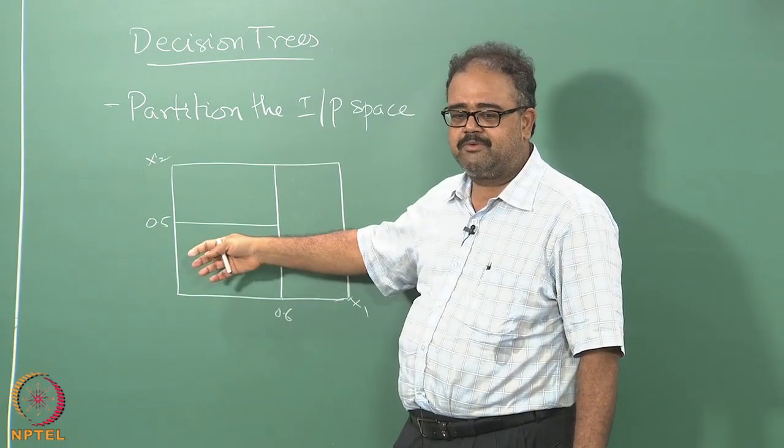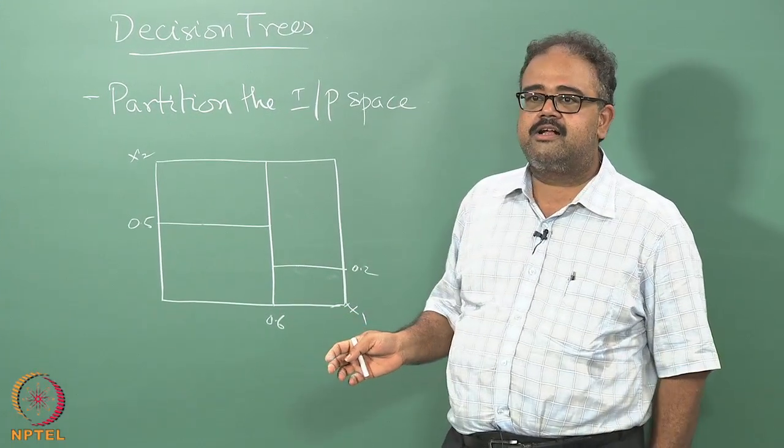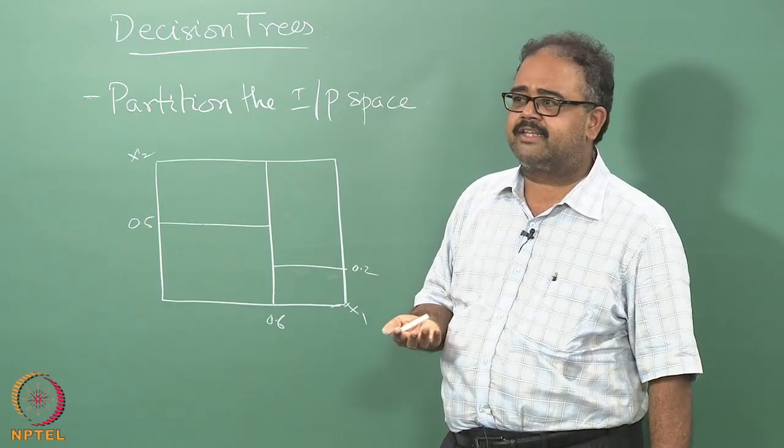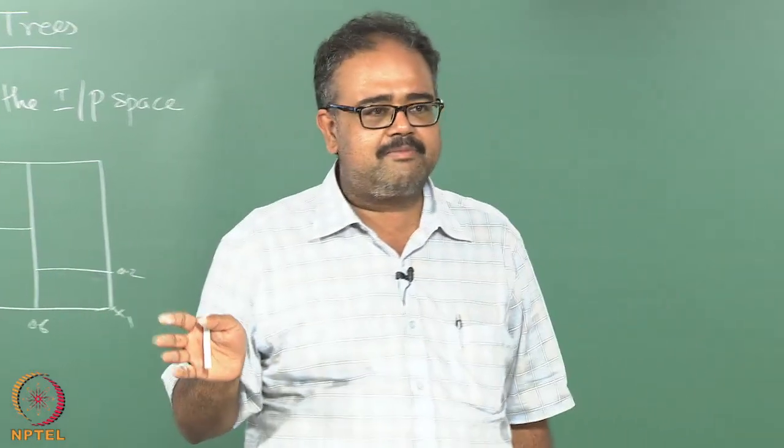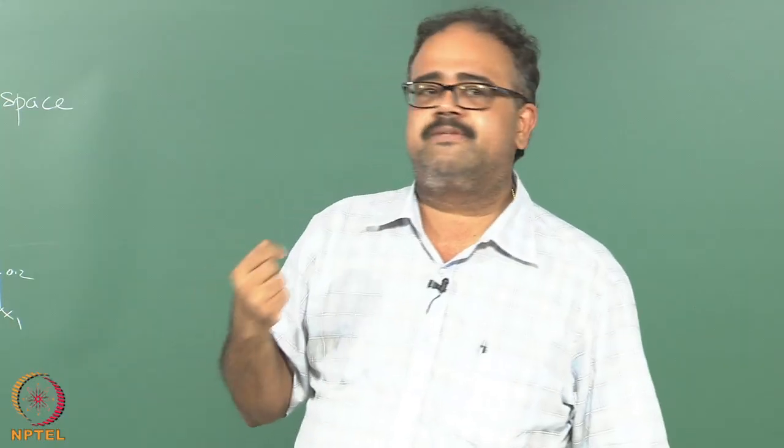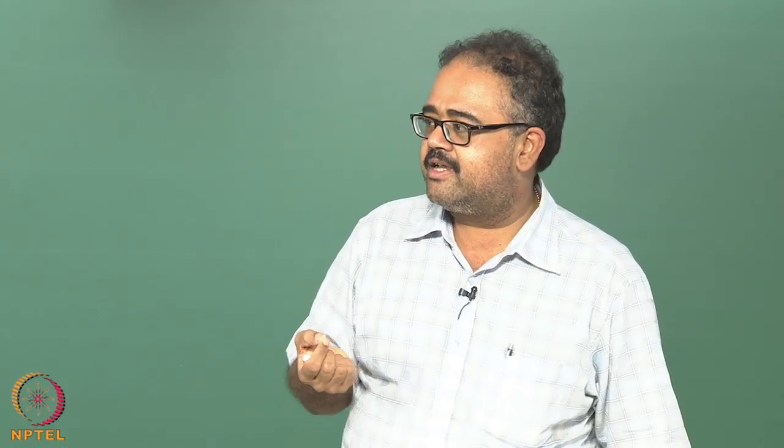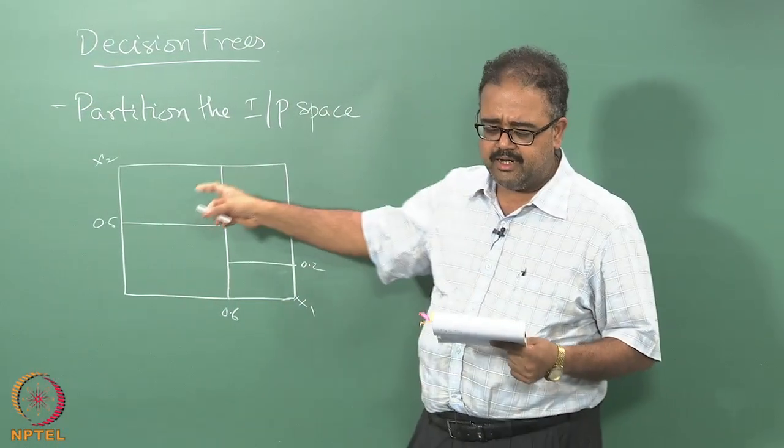What is the likelihood that the class labels will actually be this kind of rectangular regions? It could be high. It depends on what process was used to generate the class labels. If labels are generated by doing this kind of region splitting, obviously they will. You're making some kind of an assumption. Earlier we made assumptions about linear boundaries; likewise, we're making assumptions here that they will be rectangles.